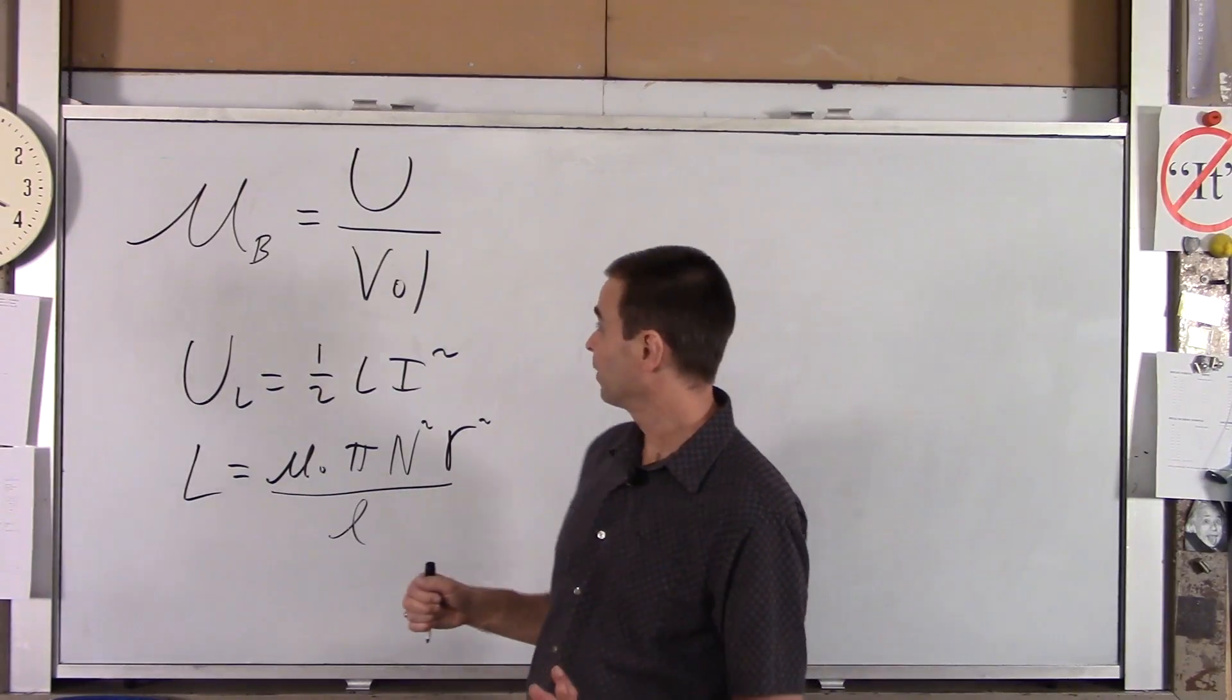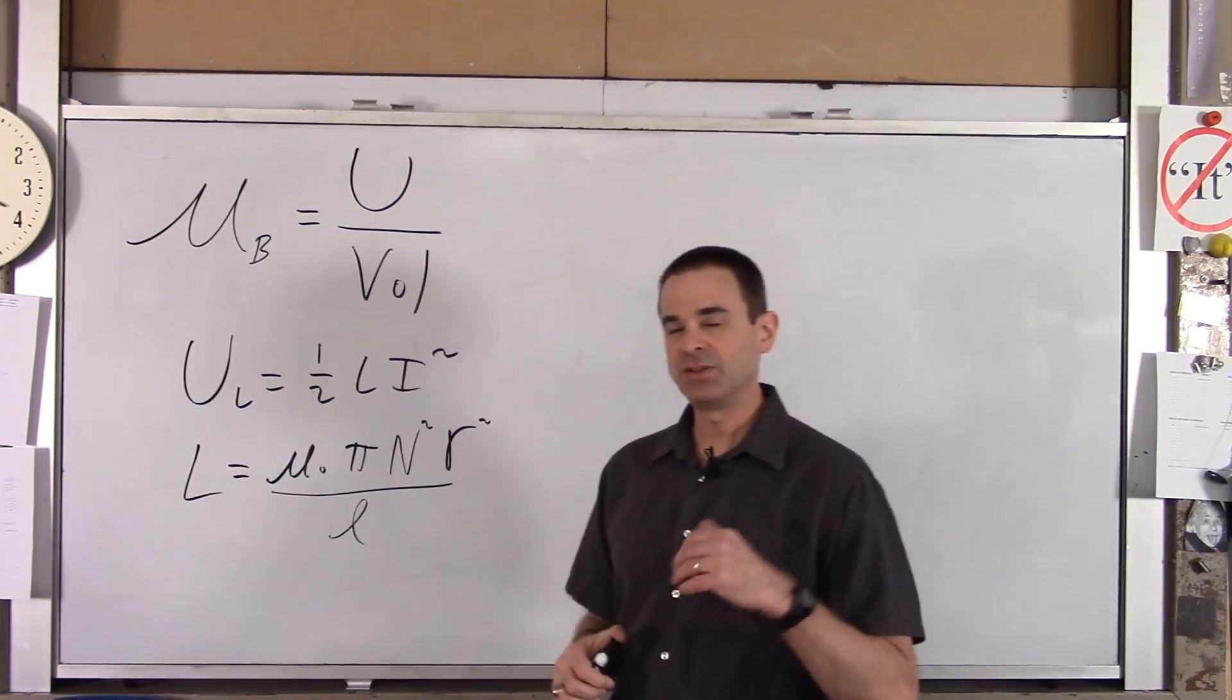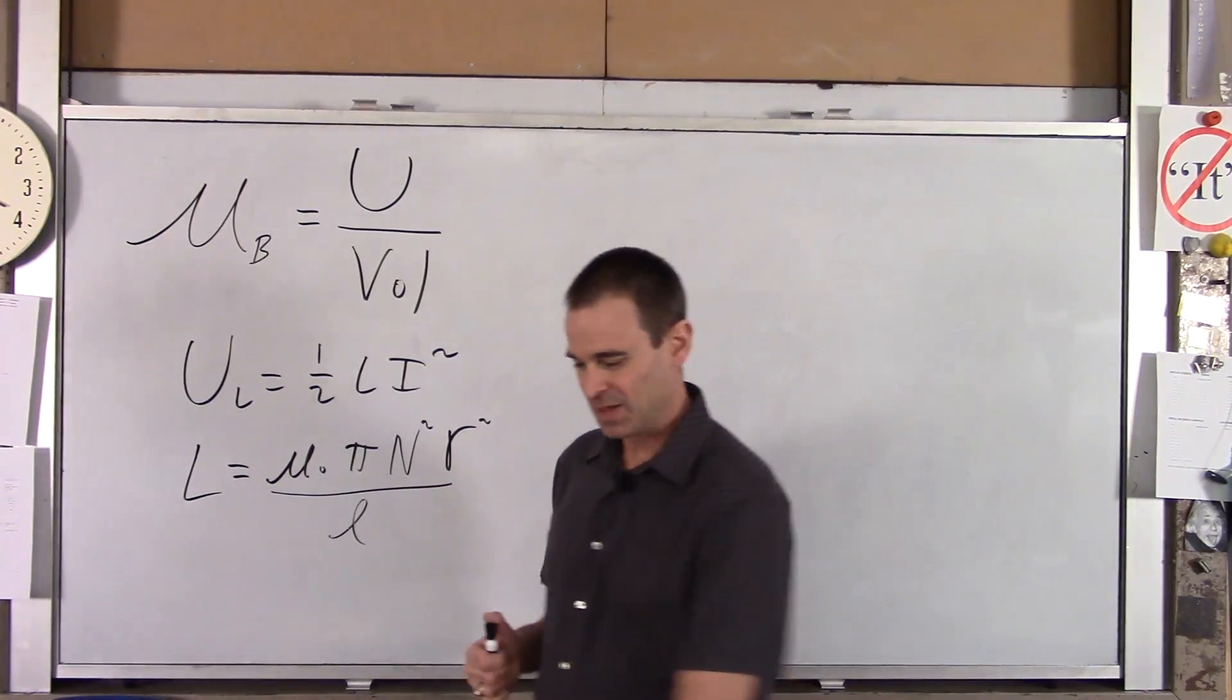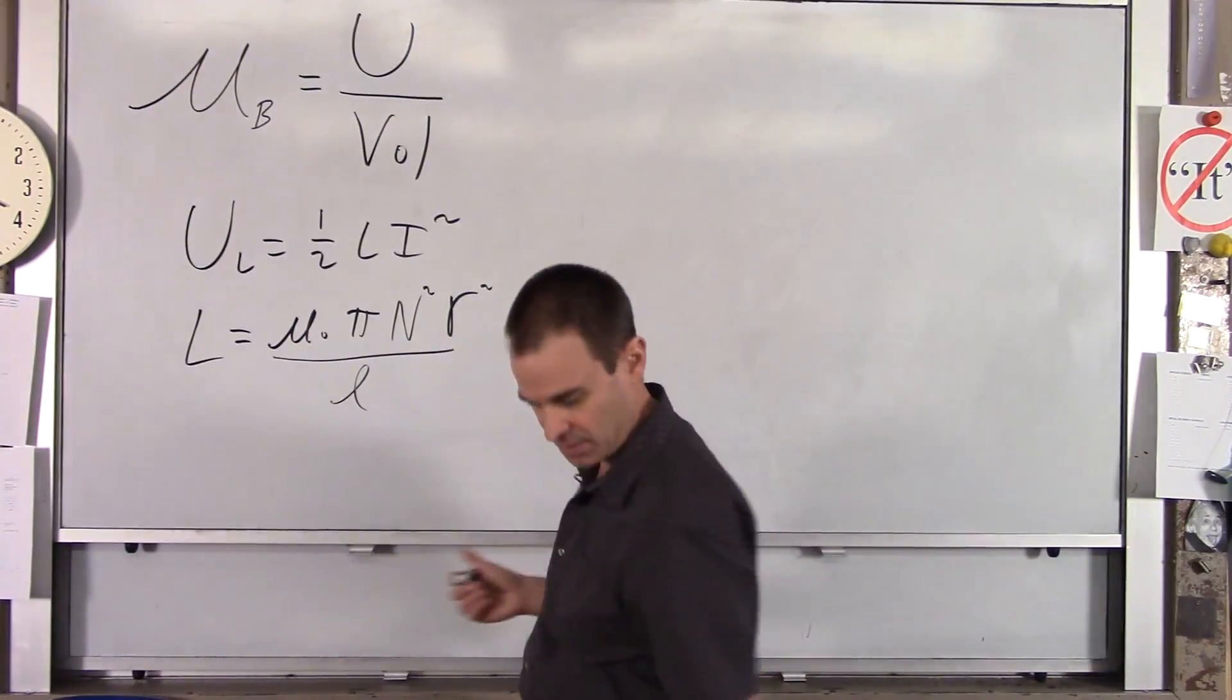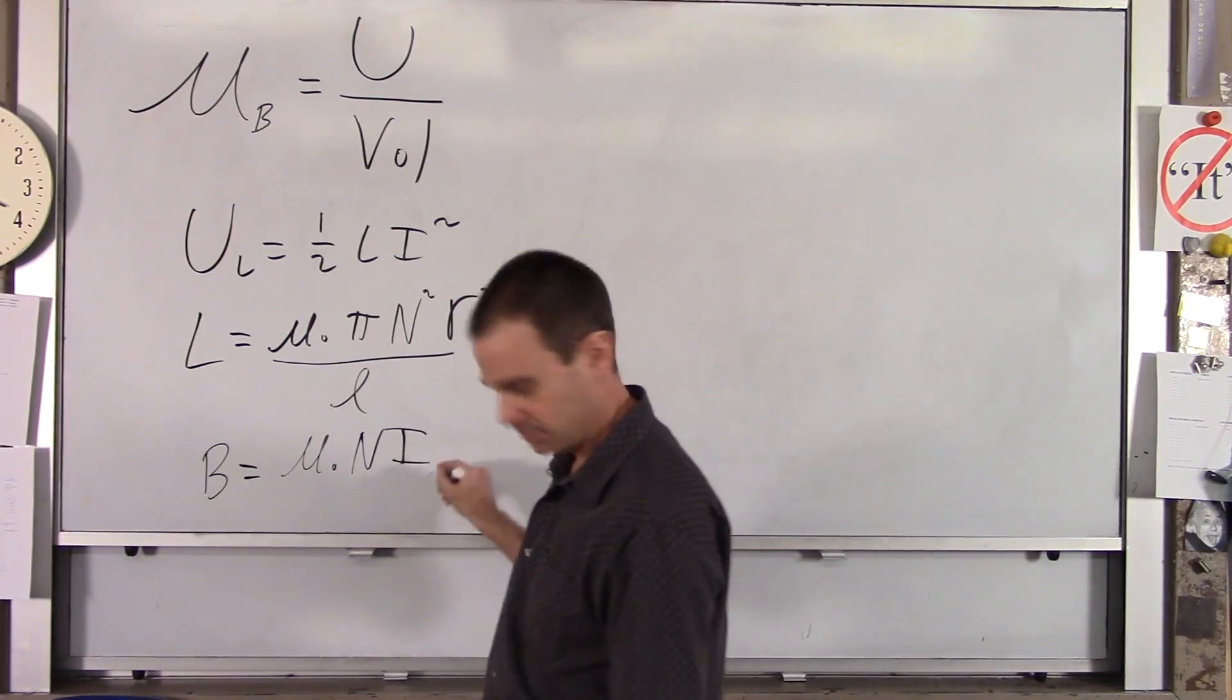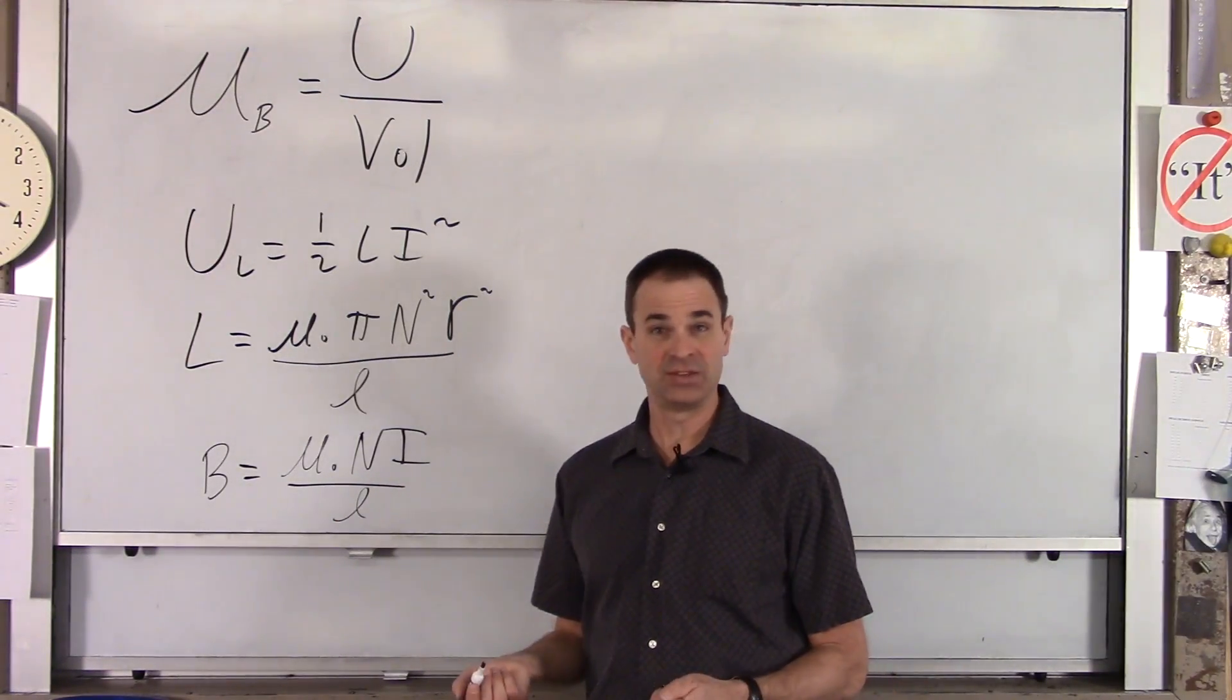The last thing we're going to need is the magnetic field created by that solenoid. And here's the deal. We're going to find the energy density in terms of the magnetic field that it's stored in. So we need to know what the equation for magnetic field is. Well for a solenoid B equals μ naught N I all over L. So that is the magnetic field created within a solenoid.